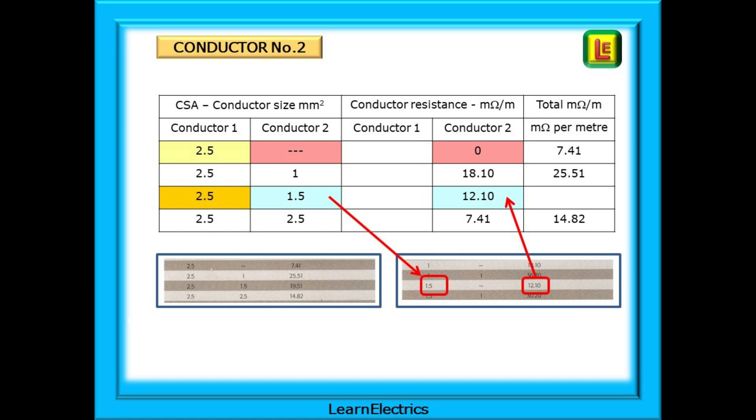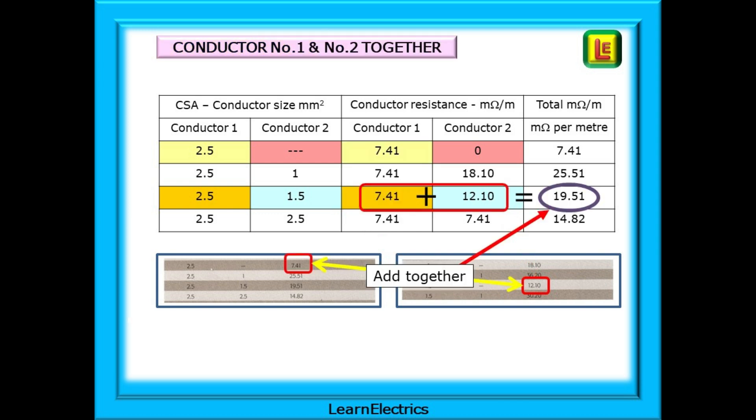This is 12.10 milliohms per meter and this can now go into the column for conductor number two. So we have 7.41 which takes into account the length of conductor number one and we have 12.10 which includes the length of conductor number two. Added together, they come to 19.51 milliohms per meter length measured just one way. There's nothing more for us to do. It's all included in the numbers in the table. So if this was 10 meter cable it would be just 19.51 multiplied by 10 meters and divided by 1000.